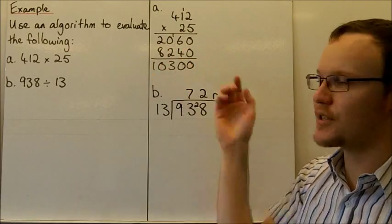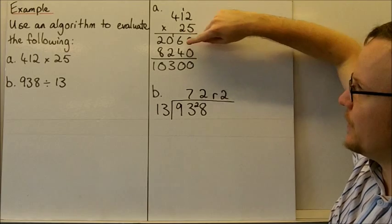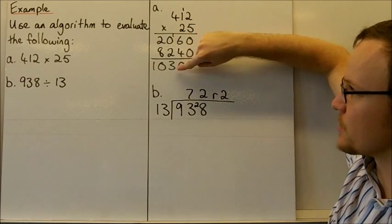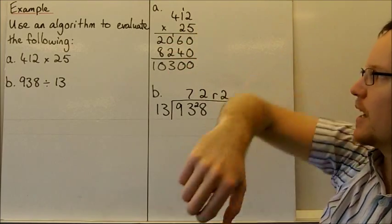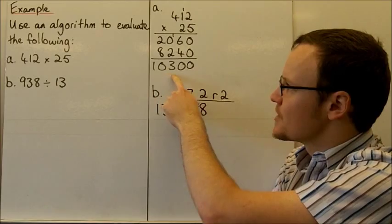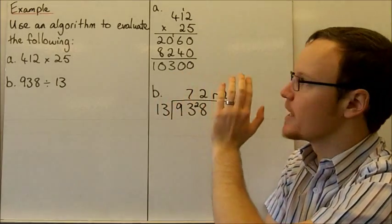Then we add these two numbers. 0 + 0 = 0, 6 + 4 = 10, carry the one. 1 + 0 + 2 = 3, and 2 + 8 = 10. So 412 × 25 = 10,300. This is the multiplication algorithm.